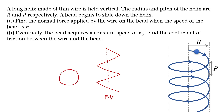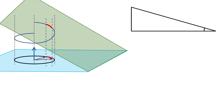Here we can say that this bead is going in the circular path in the horizontal plane, and in the vertical plane it is moving down an inclined surface of fixed inclination. The angle of inclination with the horizontal is going to remain constant. So let me make another diagram to help visualize this.